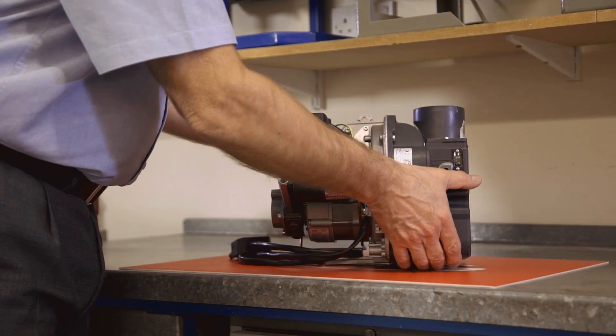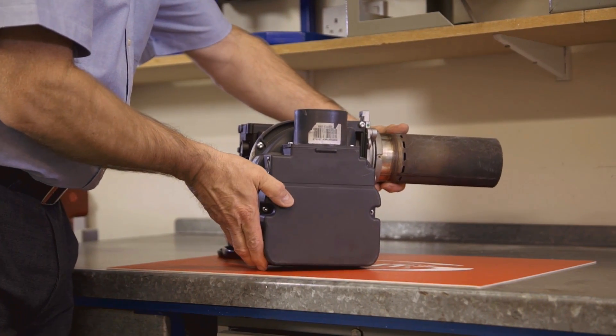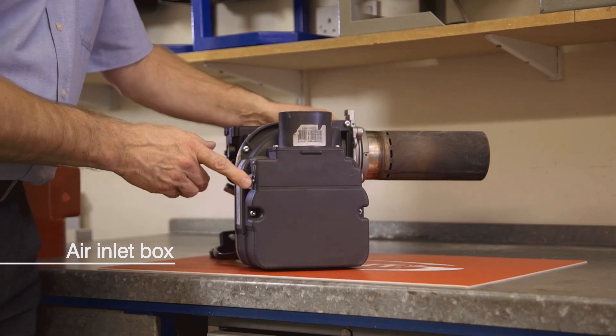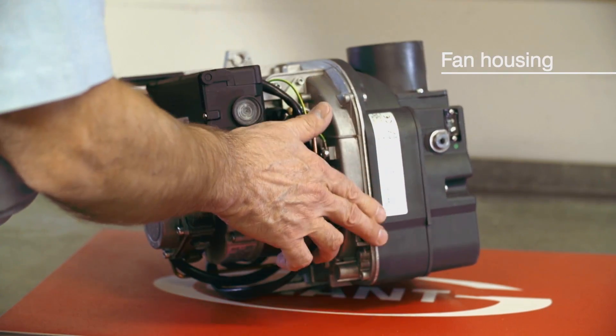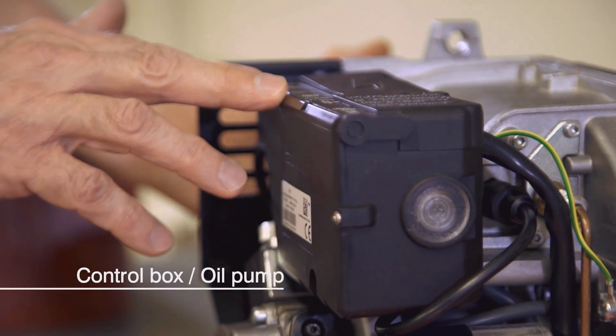The basic construction is the same as you're probably used to with the air inlet box and air adjuster on the right hand side, the fan housing in the center and the control box and oil pump on the left.